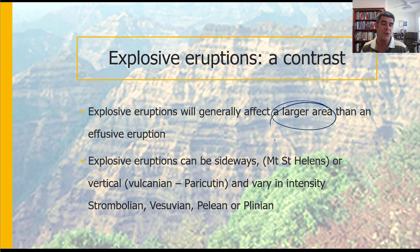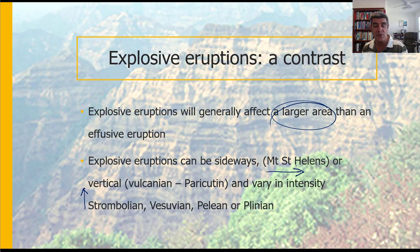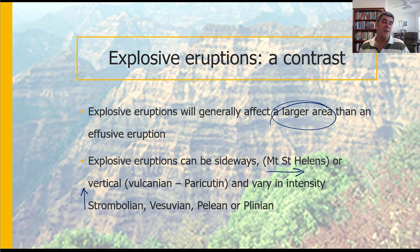There is also the opportunity for explosive eruptions to be sideways rather than vertical. A classic volcanic eruption is a vertical one — it erupts straight up out of the crater. But one of the most famous eruptions that wasn't vertical was a sideways eruption, and that was what we saw with Mount St. Helens. There can be some slightly different ways in which volcanoes erupt based on the composition of the magma, but also based on where the pressure buildup has been from the volatiles in the magma and when they are actually released.